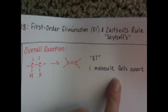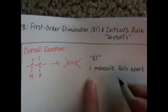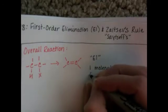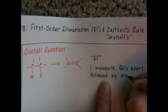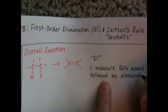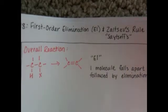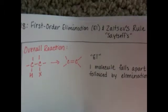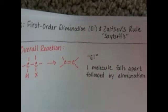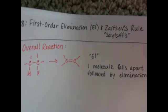In SN1, one molecule falls apart and then the nucleophile comes on and essentially replaces the leaving group. In an E1 reaction, one molecule falls apart and that is followed by elimination — nothing gets replaced. The E1 mechanism competes with the SN1 mechanism, meaning they tend to both happen at the exact same time, so when you're doing E1, a lot of times you're doing SN1 as well, and vice versa.